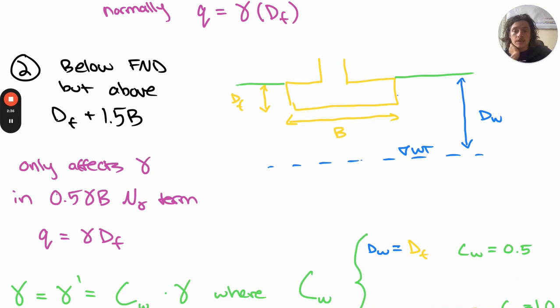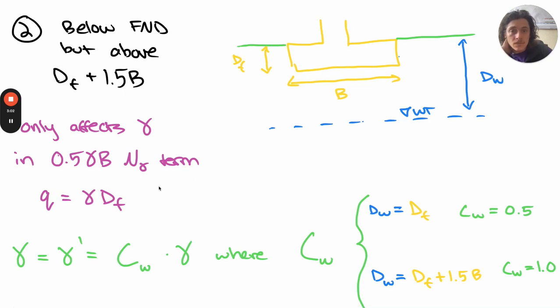The next and most complex option is when the water table is below the foundation but less than the width of the foundation from the bottom of the foundation, or what I have described as df plus 1.5b. In this case, the water table only affects the footing capacity term, modifying it based on how far the water table is below the footing. We can use this cw term that I've defined to represent how gamma is modified, interpolating between the values of 0.5 and 1.0 based on the depth of the water table in relation to the footing depth and width.